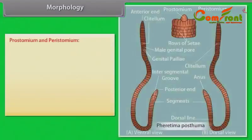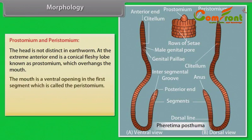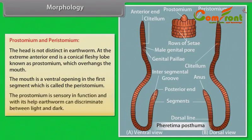Prostomium and Peristomium: The head is not distinct in earthworm. At the extreme anterior end is a conical fleshy lobe called the prostomium, which overhangs the mouth. The mouth is a ventral opening in the first segment called the peristomium. The prostomium is sensory in function and helps the earthworm discriminate between light and dark.